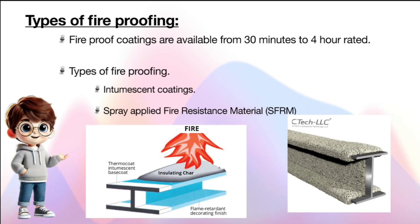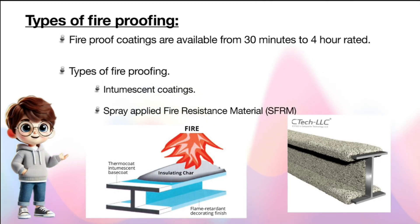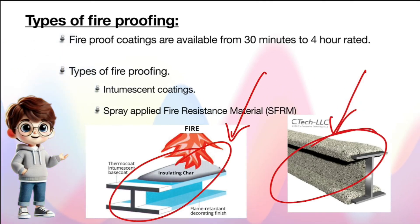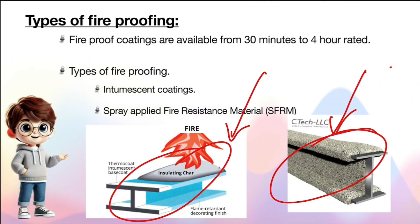As mentioned in session 1, when the weight of a member increases, the extra load coming to its supporting member will also increase. Thus, altogether it results in more foundation cost. So these are the two types of fireproofing: intumescent painting and spray applied fire resistance. Spray applied can also be available up to 4-hour rated and is cost effective, but the weight of the member increases when you apply this fire protective coating.